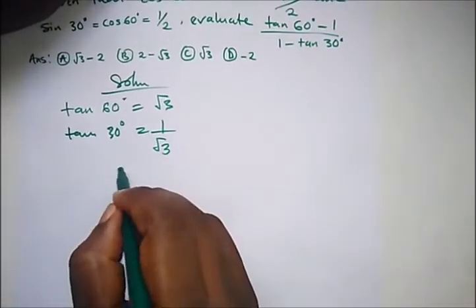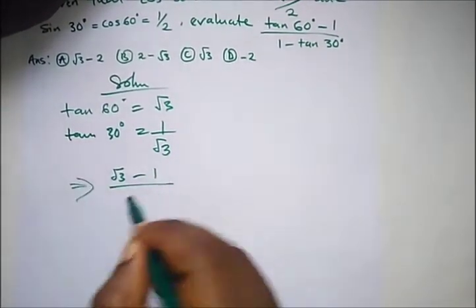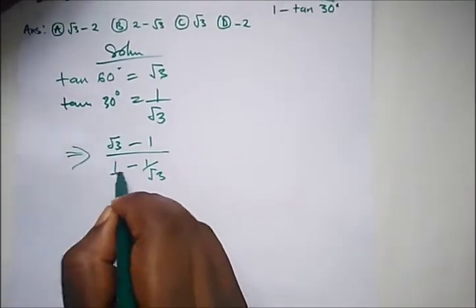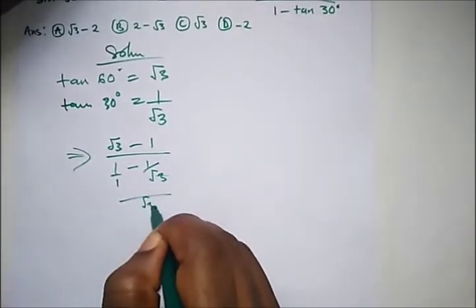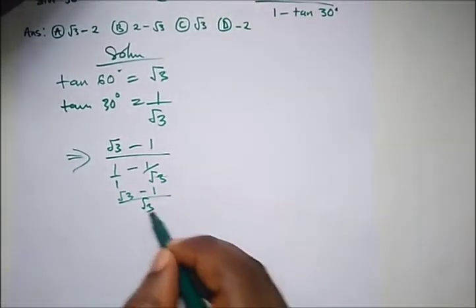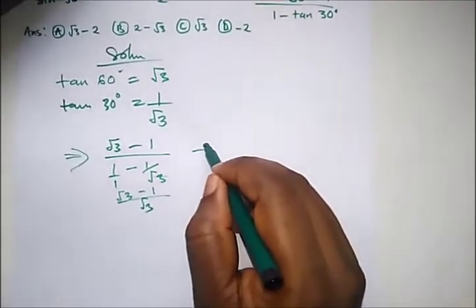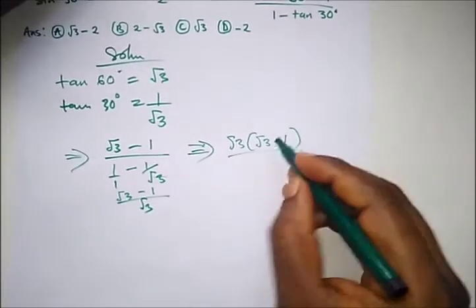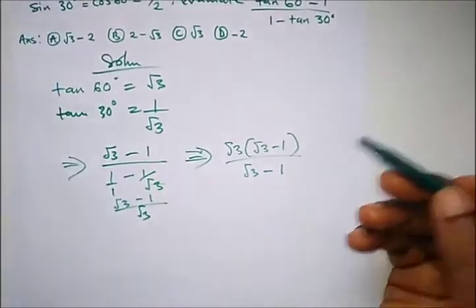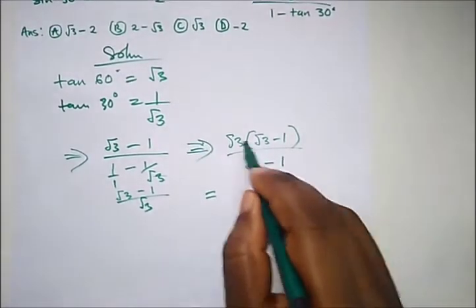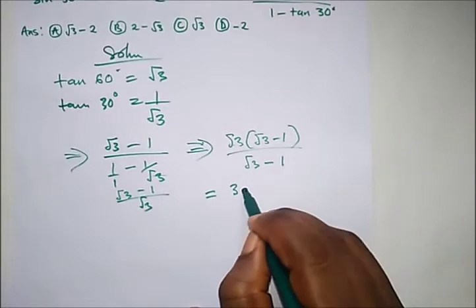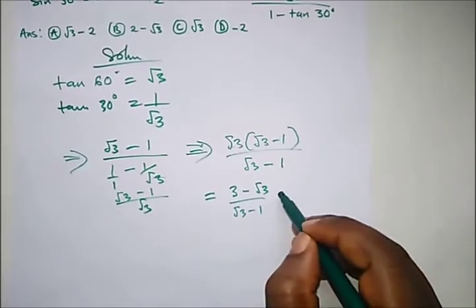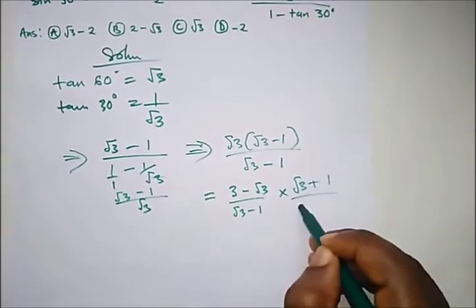We have tan 60, which is root 3, minus 1, all over 1 minus 1 over root 3. Let's solve this quickly. The LCM of this is root 3, so we bring root 3 up here. We get root 3 times the bracket (root 3 minus 1) over (root 3 minus 1). Opening up: root 3 times root 3 gives us 3, then minus root 3, over root 3 minus 1. We rationalize by multiplying by (root 3 plus 1) over (root 3 plus 1).